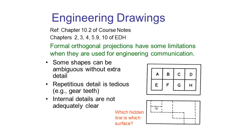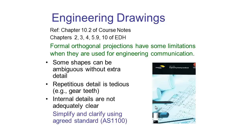We might also want to consider an example where we've got some cutouts in the center of our object and hidden lines have been used to try and show what exactly is happening, but it's very difficult to determine which hidden line is which surface. So there should be some way of clarifying this detail.